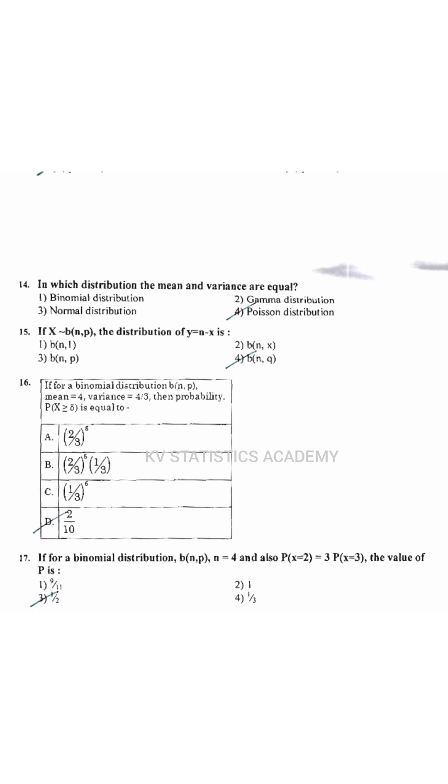If X belongs to B(N, P), the distribution of Y equal to N minus X is B(N, Q).